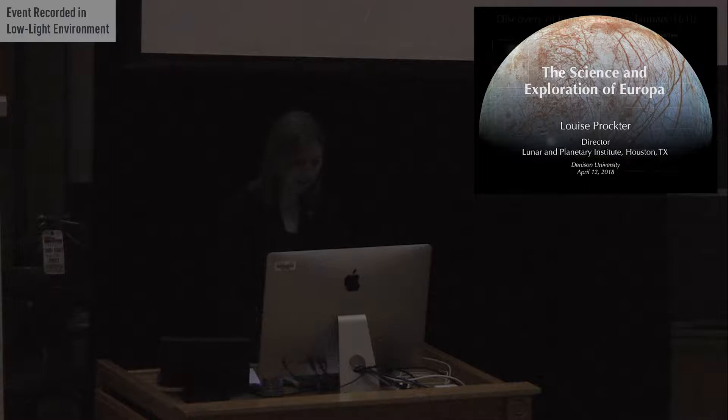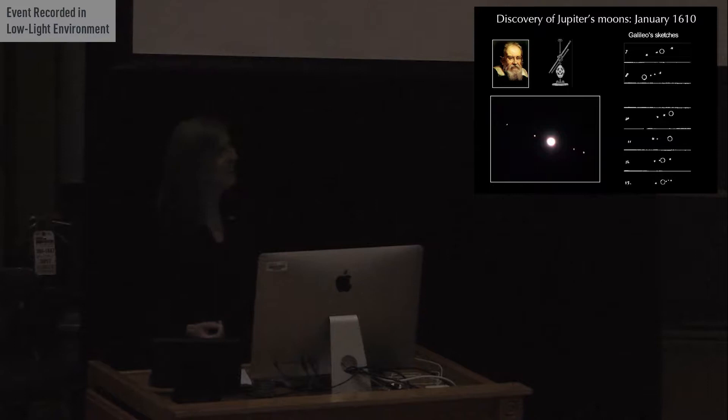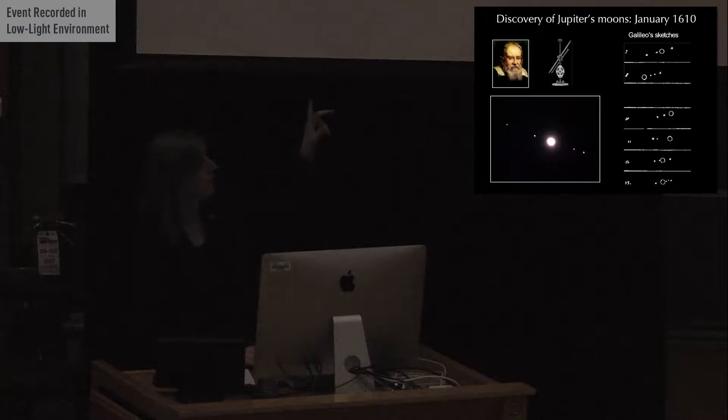So first of all, the first person to point an instrument at the Jupiter system was the Italian astronomer Galileo Galilei in 1610. His instrument was really little more than a cardboard tube with some lenses in it, but he discovered some phenomenal things.